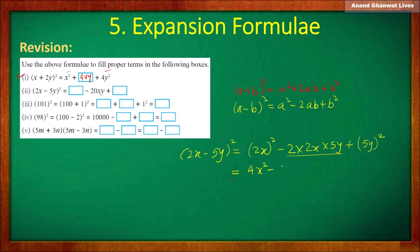The square of 2x is 4x²; then 2 × 2 × 5 = 20, so minus 20xy; plus the square of 5y, which is 25y².